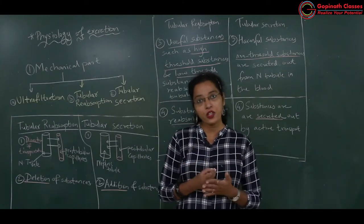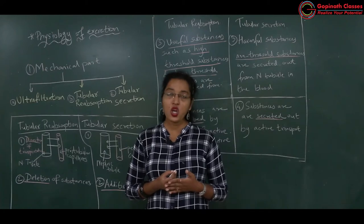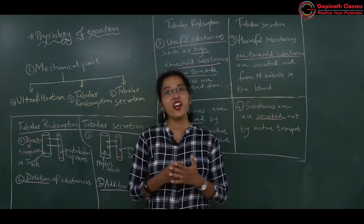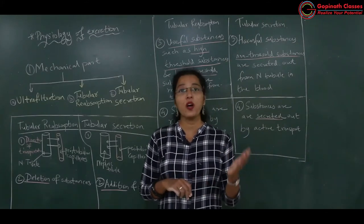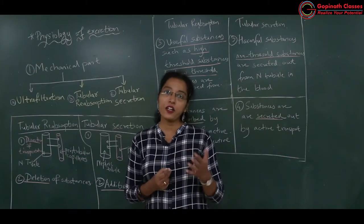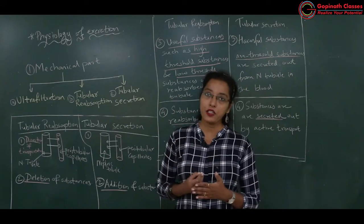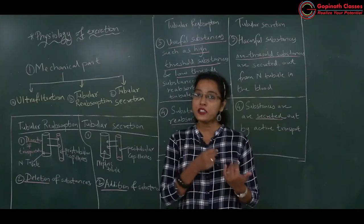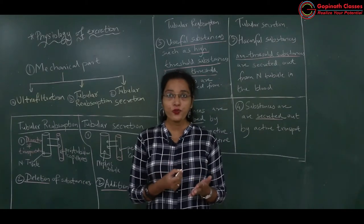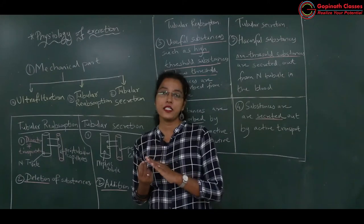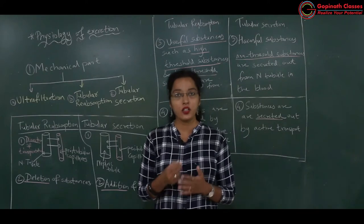Peritubular capillaries are the capillaries that surround the nephron. They are formed due to division and redivision of the efferent arteriole. These peritubular capillaries remain around the nephron to take up useful substances from the ultrafiltrate, while harmful substances present in the blood of the peritubular capillaries should be excreted by entering the renal tubule. So there should be an exchange of substances.